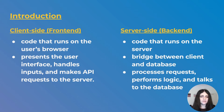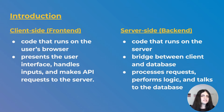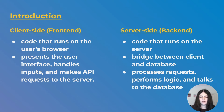APIs — application programming interfaces — are the middleman between the front end and the back end; think of them like a mailman taking information from one place to another. The server side is the back end — code that runs on the server. It's a bridge between the client and a database: it talks to the database, performs logic, and processes requests. All the heavy processing and database work gets done from the server side.